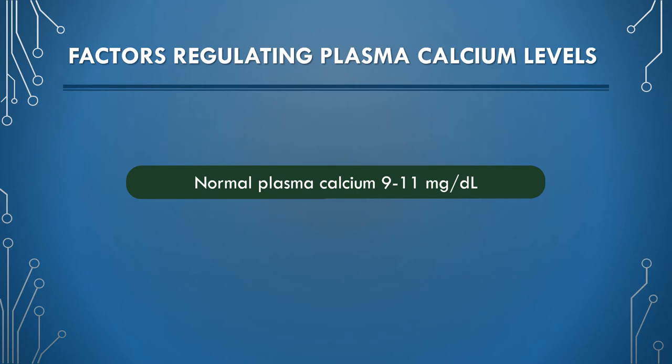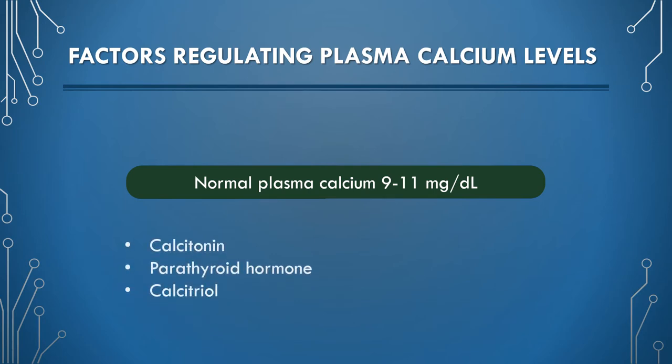The normal plasma calcium concentration is 9 to 11 mg per deciliter. The factors that regulate the plasma calcium level are calcitriol, calcitonin, and parathyroid hormone.